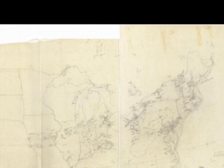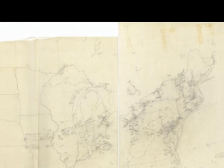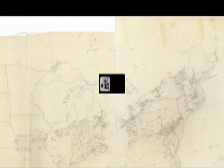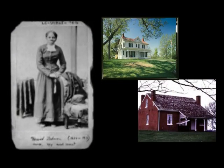The Underground Railroad was a complex system run by various conductors and abolitionists before and during the American Civil War that helped slaves get to freedom. This network was not run by one person, but a group of people who were known as abolitionists — people who wanted to see slavery abolished.